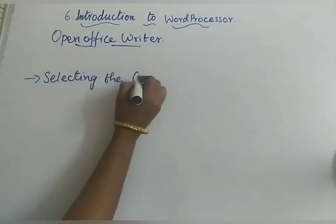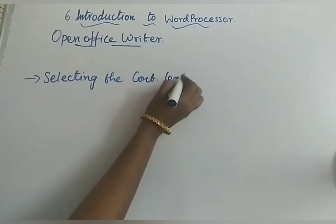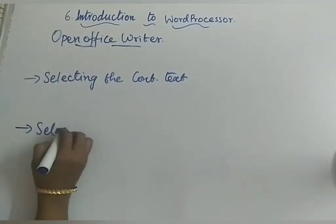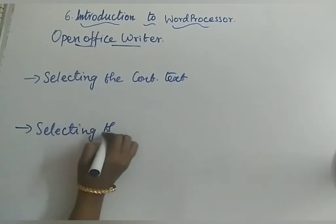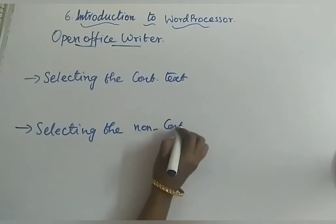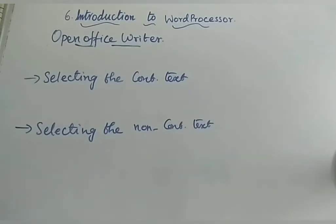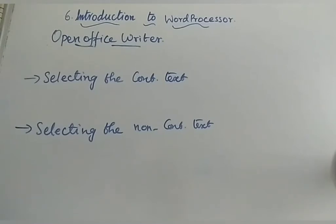Continuous means selecting a block of text together in one stretch. Non-continuous means selecting separate lines — for example, the first line, then the third line, then the fifth line, skipping lines in between. First we will see how to select continuous text, and then non-continuous text.